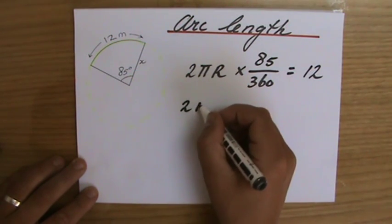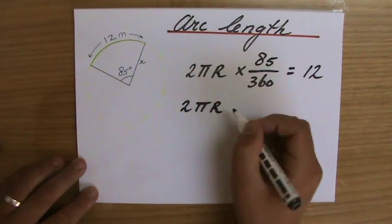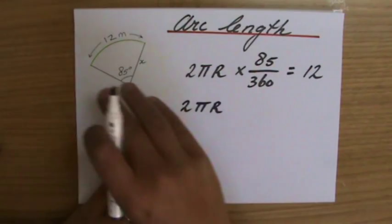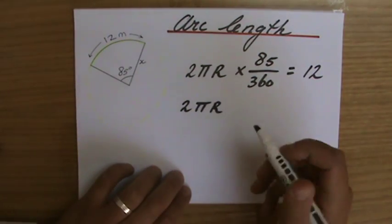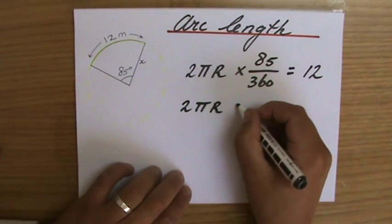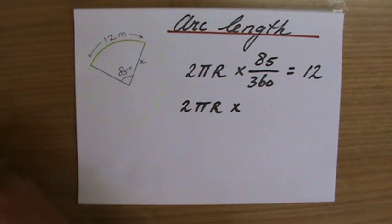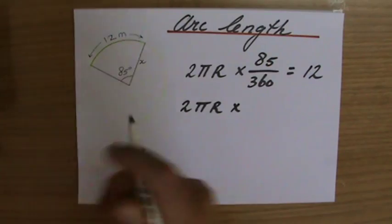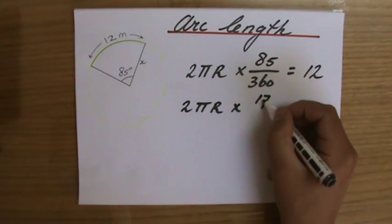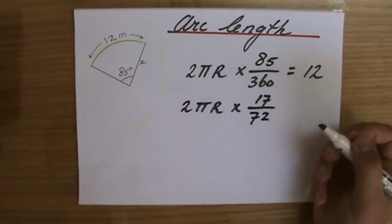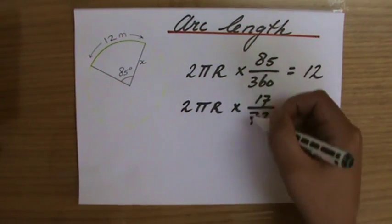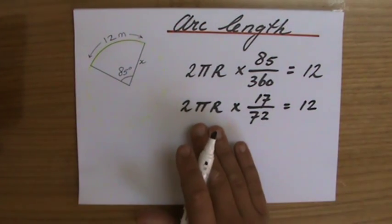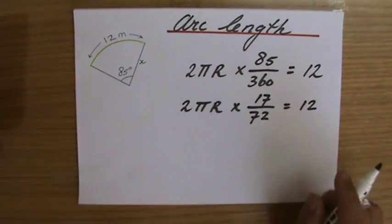So, 2 pi r, yeah? And 2 pi is a number, right? You can put it in your calculator. But I'm just going to leave it like that, because I'm going to get a lot of decimals otherwise. Times 85 over 360. Well, if you'd like, you could even simplify that, if you're a little bit scared of that. That is 17 out of 72. Equals, it's a factor of 5 to take out, equals 12. 2 pi times 17 over 72 equals 12. 2 pi r, I should say.